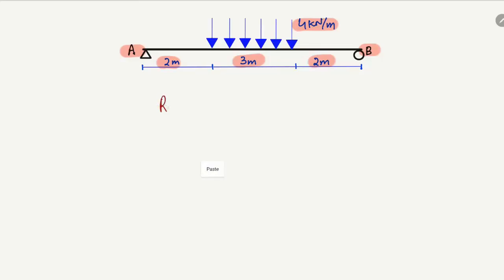Support reactions RA and RB are unknown to us. Since there is a hinge support at A, it will take both vertical and horizontal loads. However, the horizontal load is equal to zero because there is no horizontal or inclined load acting on this beam. The roller support at B can only take the vertical load, represented by RB. So we have to find out RA and RB.